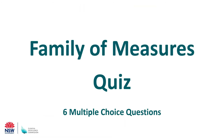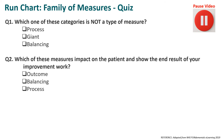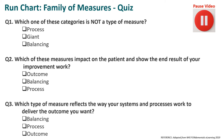It's now the family of measures quiz time — six multiple choice questions. Question one: Which of these categories is not a type of measure? Process, giant, or balancing? Question two: Which of these measures impact on the patient and show the end result of your improvement work? Outcome, balancing, or process? Question three: Which type of measure reflects the way your systems and processes work to deliver the outcome that you want? Balancing, process, or outcome? Pause the video and reflect on these questions.